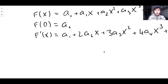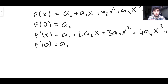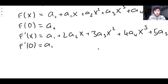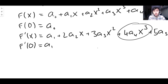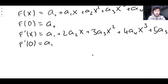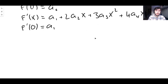Now we can find a₁. Evaluating f'(x) at zero: f'(0) = a₁ + 2a₂·0 + 3a₃·0² + 4a₄·0³ + ... Every term goes to zero except the first, so a₁ = f'(0) — the derivative of f evaluated at zero.